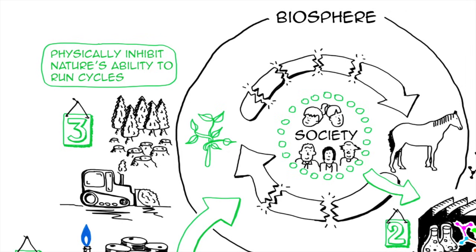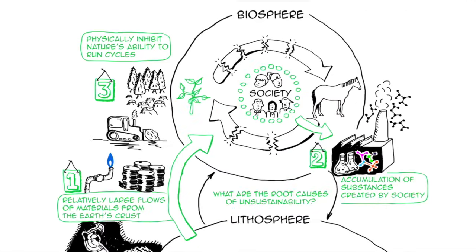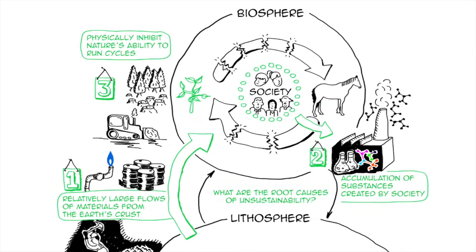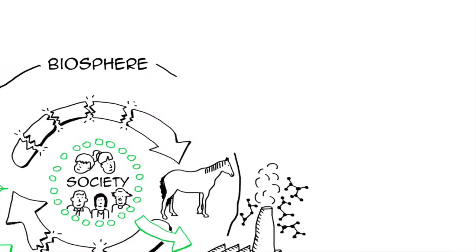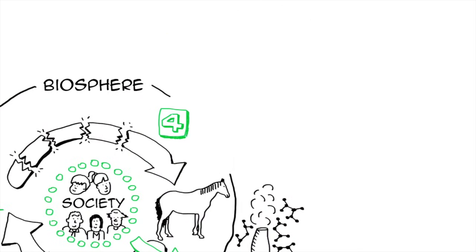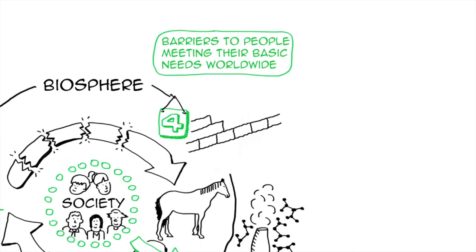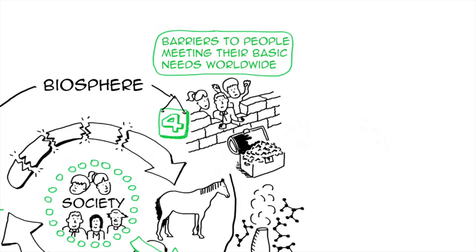These are three ecological root causes. Once again, there is no priority order. The fourth one is social and can actually be the most important of all. We create, in our society, barriers to people meeting their basic human needs worldwide. Human needs are very interesting and you can watch our video about them if you are interested. There are things like creativity, identity, participation, and so on and so forth.